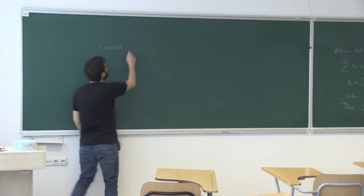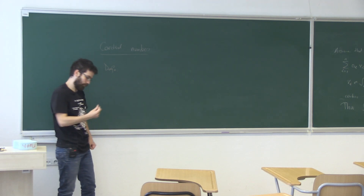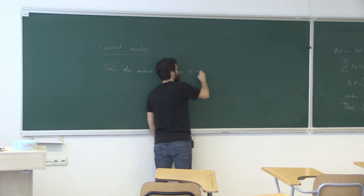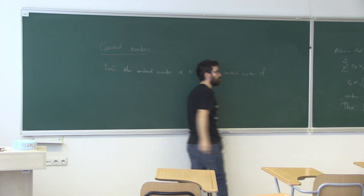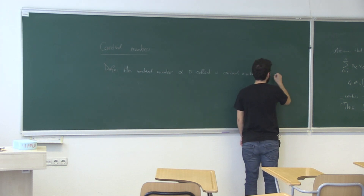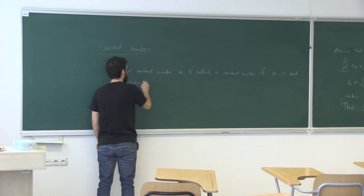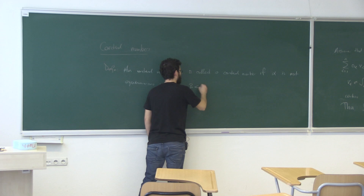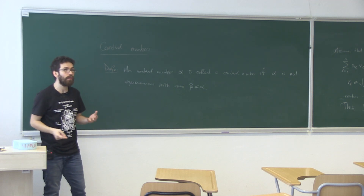Let's start talking about cardinal numbers. Definition: an ordinal number alpha is called a cardinal number if alpha is not equinumerous — not in bijection — with any beta less than alpha. If you have an ordinal number which cannot be put in bijection with any previous ordinal, you call it a cardinal.